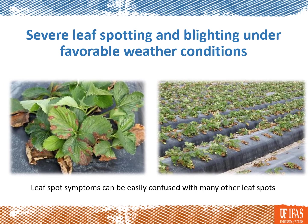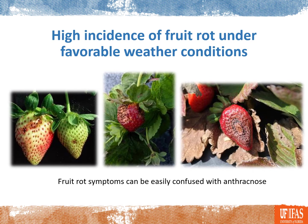By now I believe most growers are familiar with the symptoms of the disease which start with small leaf spots on the leaves. Those spots can quickly expand to blight a significant portion of the leaves under favorable weather conditions. The leaf spots can be easily confused with many other leaf spots out there, so if in doubt just bring us a sample to the diagnostic clinic for proper identification.